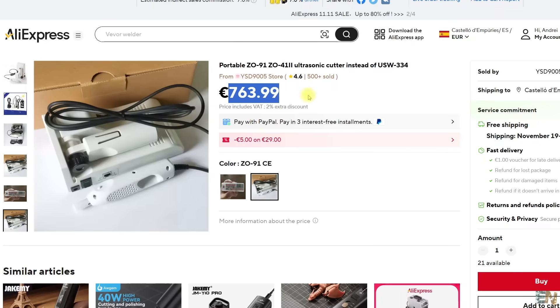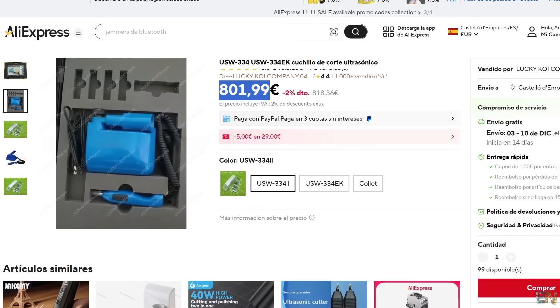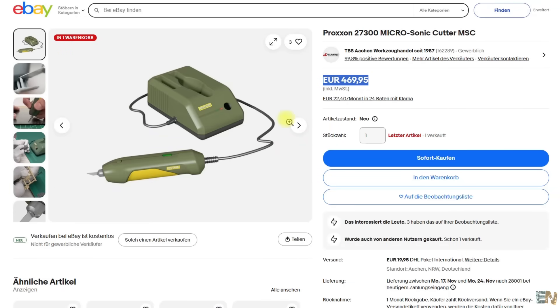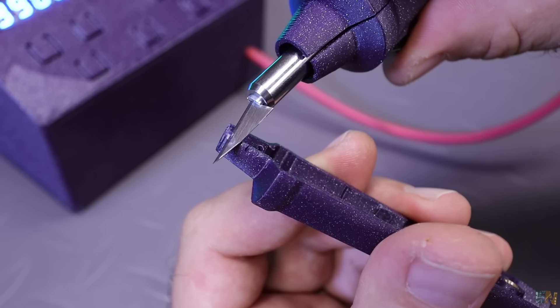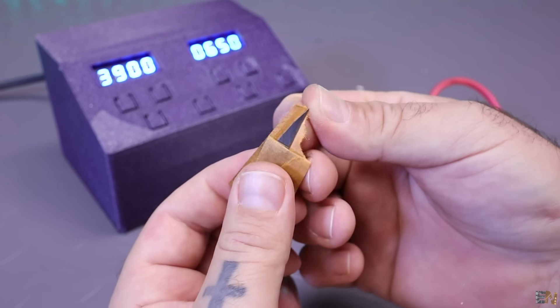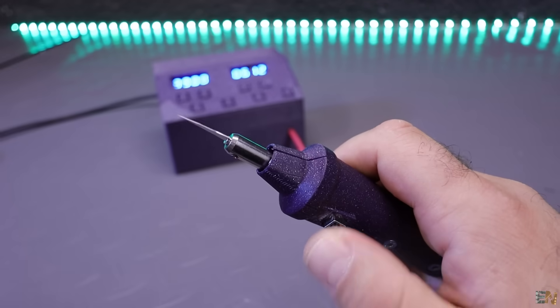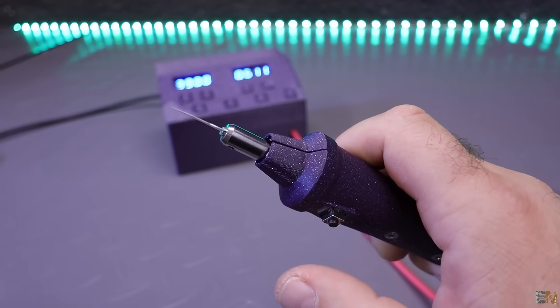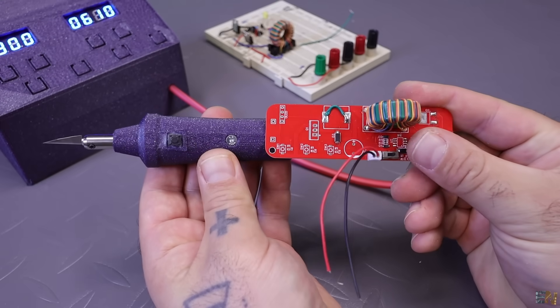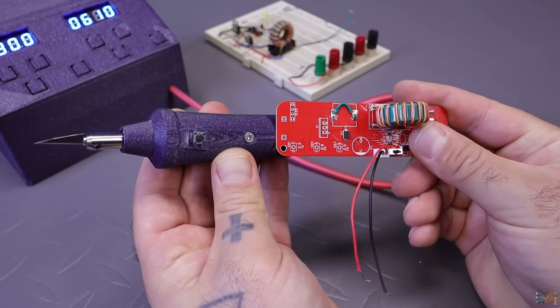And just like that I have a simple ultrasonic cutter. And compared with what I found online for $700 or $800, this was way cheaper. So guys, during the next weeks I'll study more how to generate 500V and 40kHz signal and make the circuit as small as possible. So I could be a handheld cutter and redesign my PCB. So stay tuned for that.